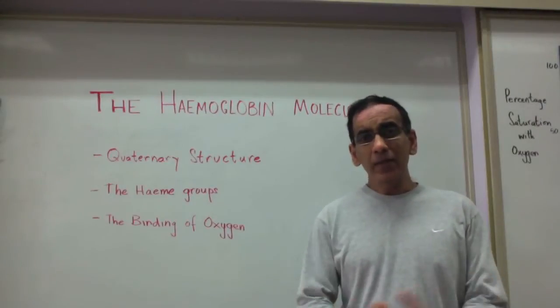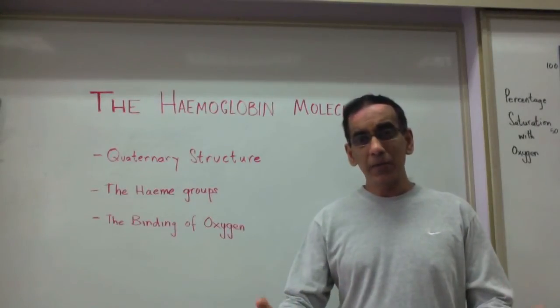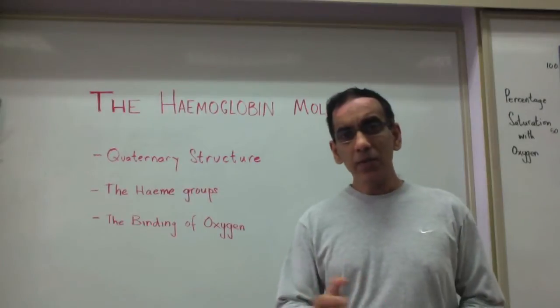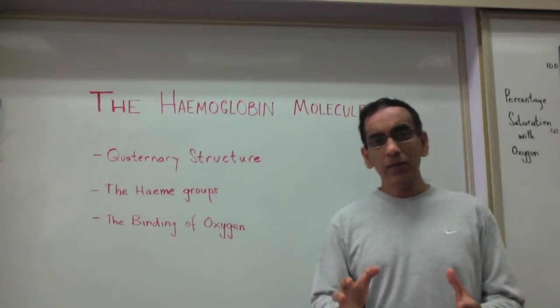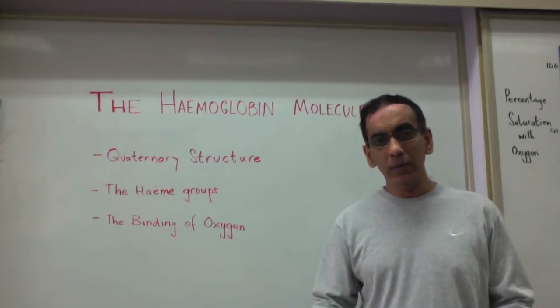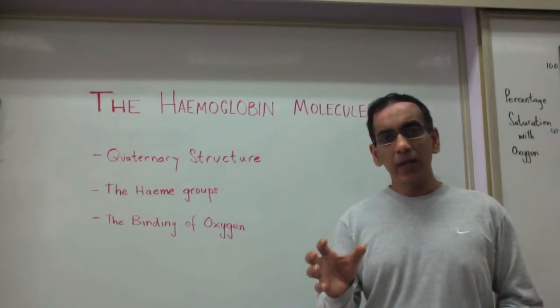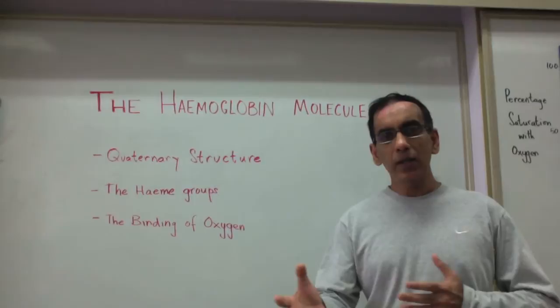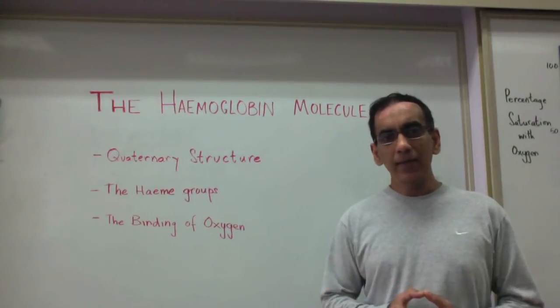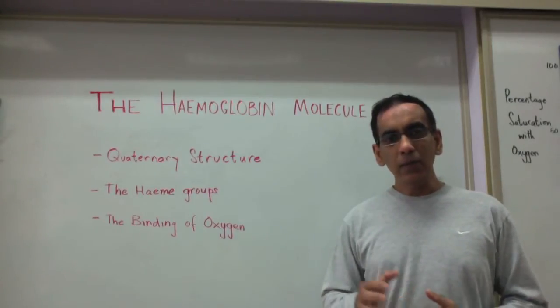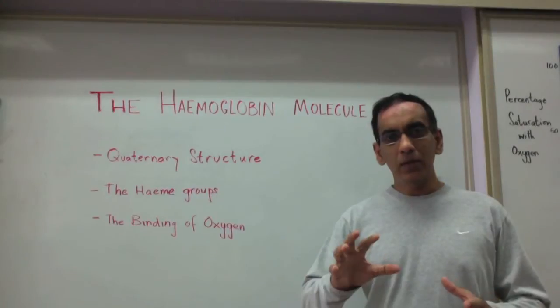Welcome again. Before we can look at how oxygen is transported in the blood, it is most useful to understand the structure of the hemoglobin molecule. You would recall that hemoglobin is described as having a quaternary structure and that it contains heme groups. I would like you to try to put together your own model of the structure of hemoglobin.